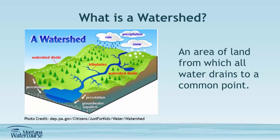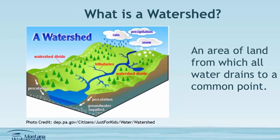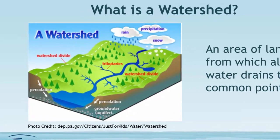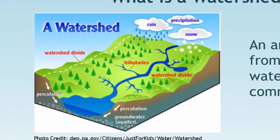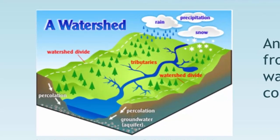A watershed is an area of land from which all of the water drains or seeps to a common point. It can also be thought of as the total upstream area drained by a stream or river. A watershed also represents a connection between all of the people and activities found within its boundaries.